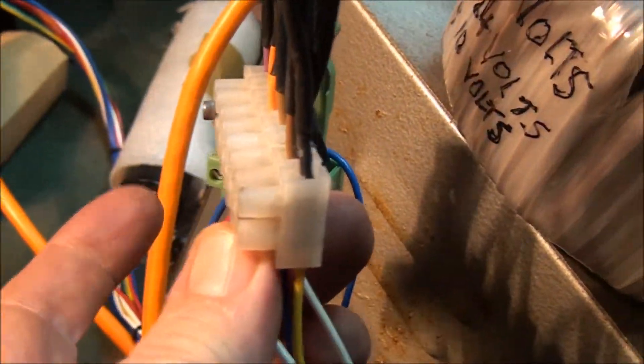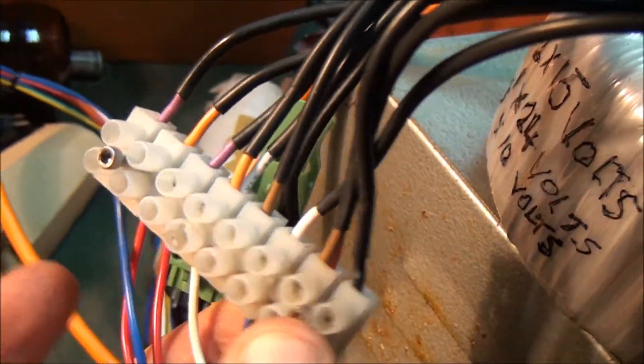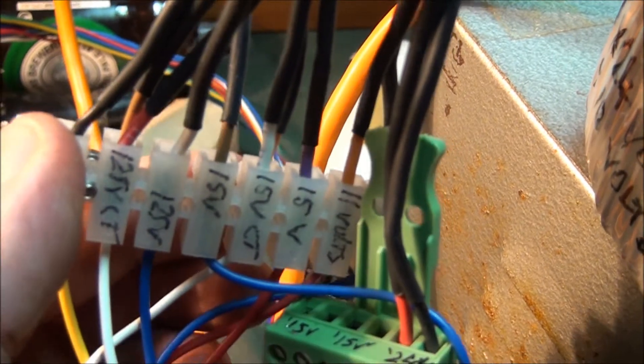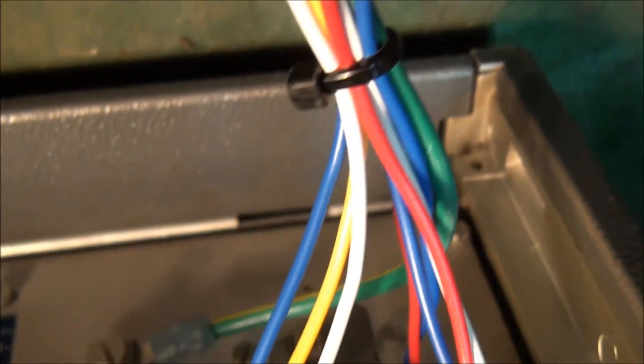I wired up a terminal block to it, marked the relevant voltages on it, then ran the wires around here, made a crude loom, and passed it through the back of the instrument here through the original screw holes for the old transformer.